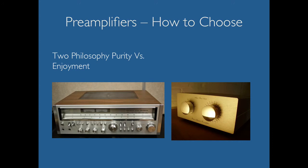There are two philosophies when choosing a preamplifier: purity versus enjoyment. On the right I would say that is a very pure preamplifier — it's basically selecting sources and applying level, very transparent and clear. If you look at the Sanyo on the left, you can see all types of EQs, buttons, knobs, and balances that could really enhance the original recording. Do you want something extremely transparent but limited, or something with lots of features that may end up coloring the original performance quite a bit?